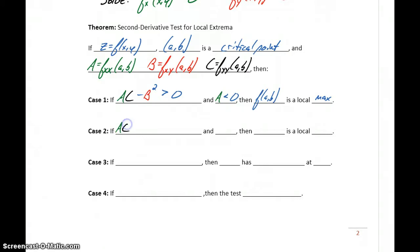If this exact same expression, A times C minus B squared turns out to be something positive, so greater than zero, and our value for A is greater than zero, then our point f(a,b) is considered to be a local minimum.